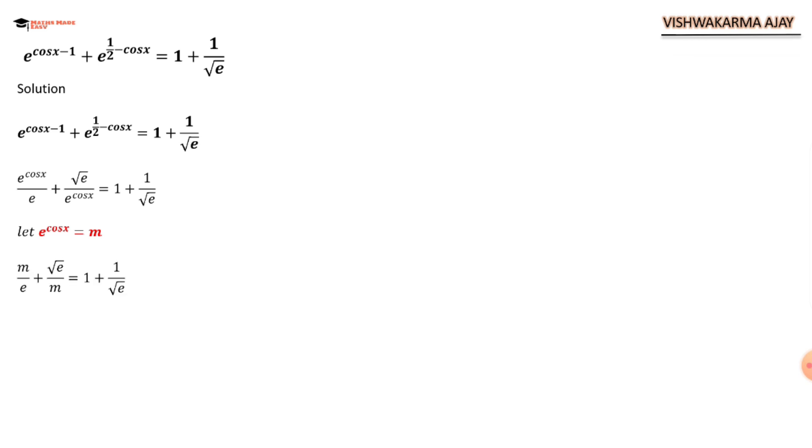So we have m upon e plus root e upon m is equal to 1 plus 1 upon root e. Let us do some cross multiplication here. m square plus e times root e upon em is equal to 1 plus root e upon root e.